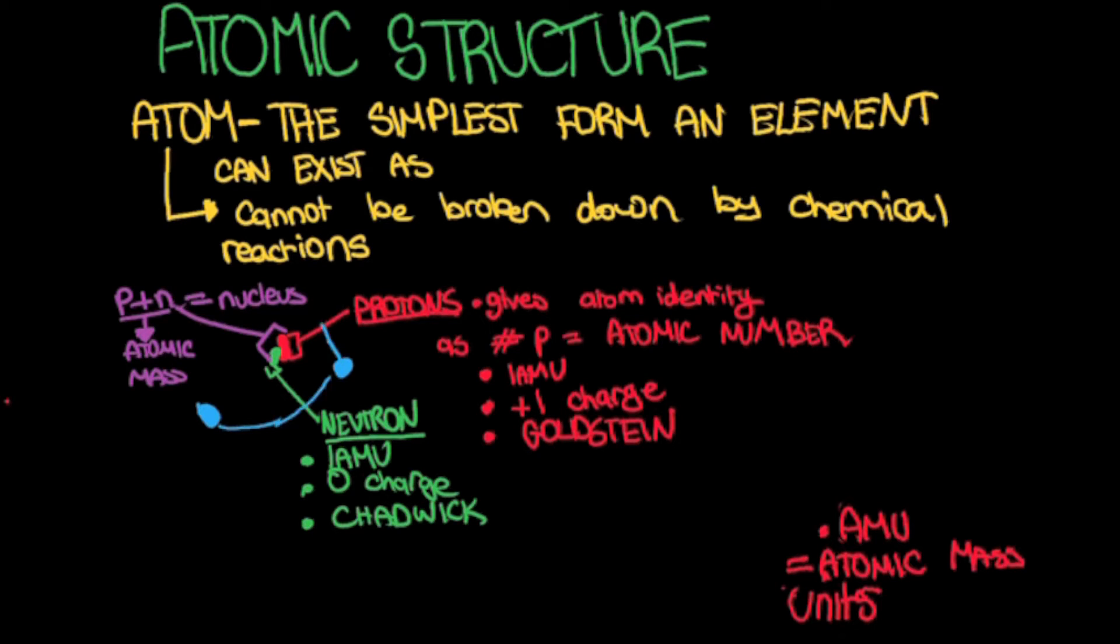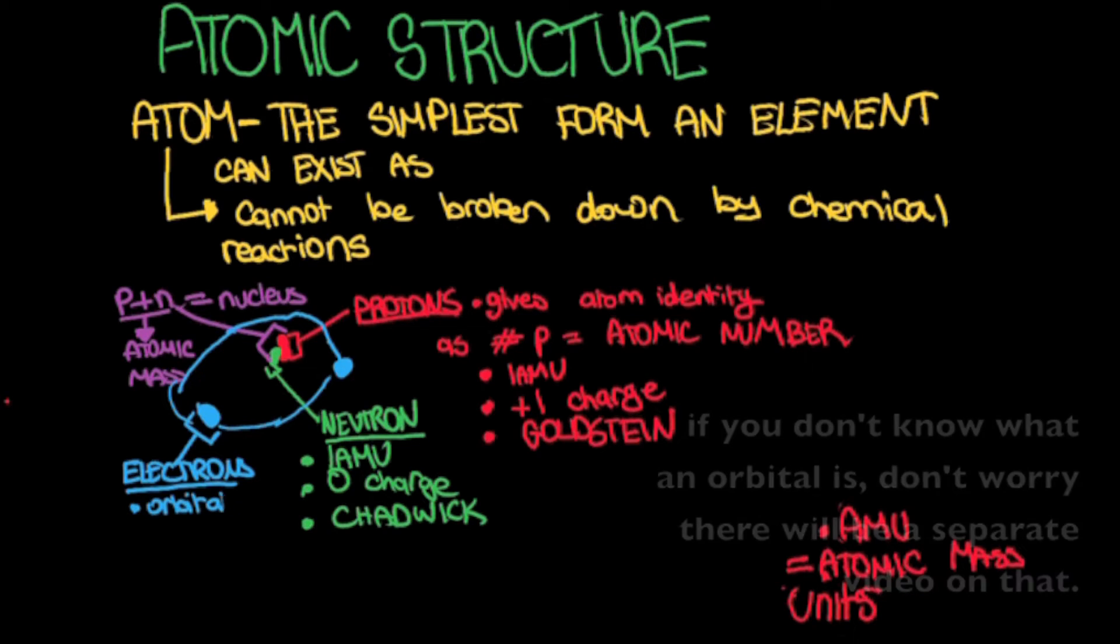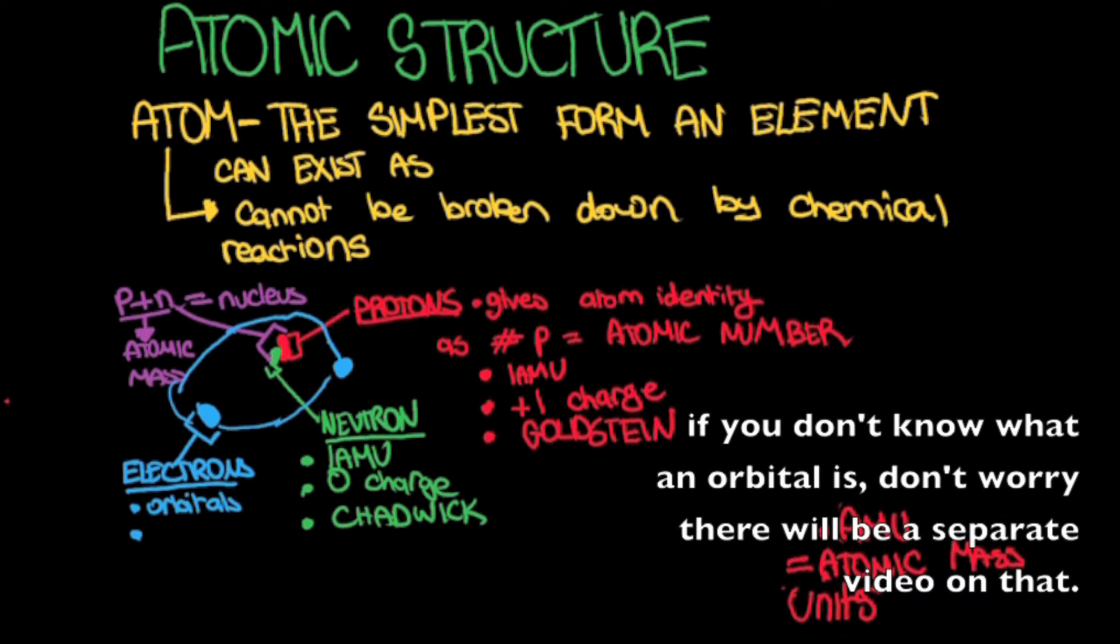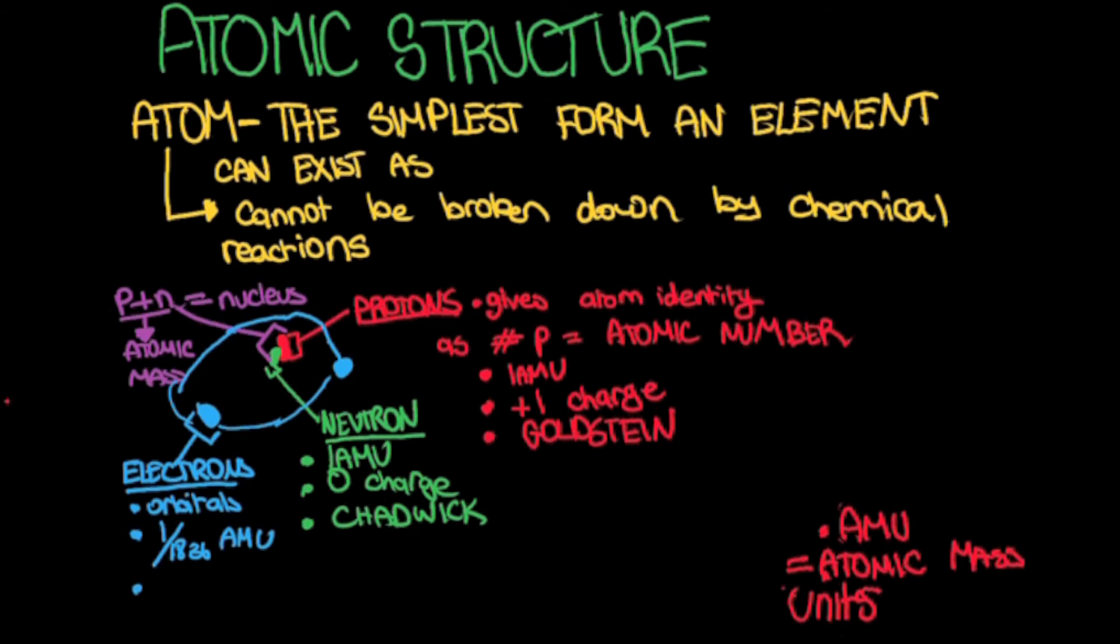The last subatomic particle we are going to look at is the electron. The electron is located outside the nucleus in things called orbitals. The electron is really light, with a mass of 1 over 1836 amu. The electron is also negatively charged. Another thing about electrons is that the number of electrons is equal to the number of protons in a neutral atom. So the number of positive charges equals the number of negative charges and the net charge is zero, hence a neutral atom.